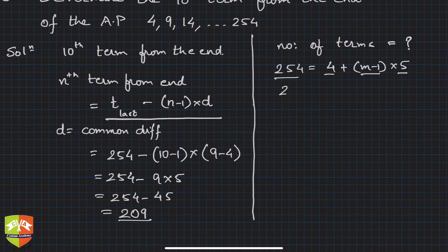This is 250 divided by 5 equals m minus 1. So 50 equals m minus 1, so m equals 51. There are 51 terms in the given sequence.